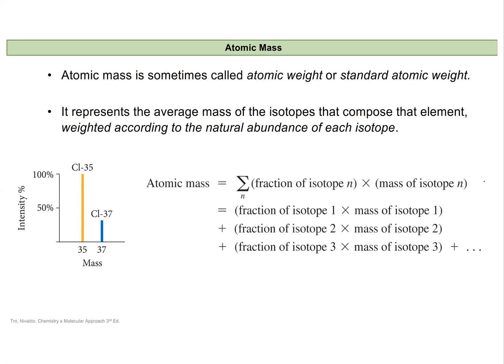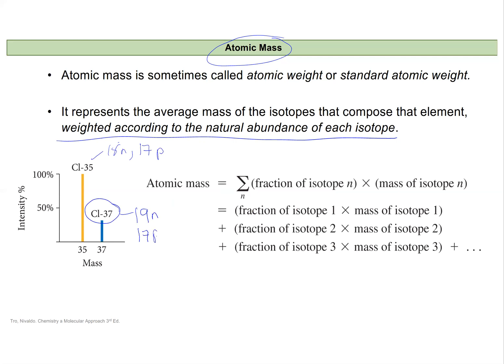The element symbols on the periodic table usually have a number with many decimal places — this is the atomic mass. The atomic mass doesn't correspond to a specific number of particles in a single atom; instead it represents a weighted average of the natural abundances of isotopes for that element. Let's look at chlorine as an example. Chlorine-35 has 18 neutrons and 17 protons.